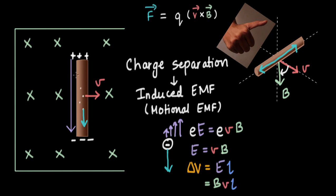Now when we connect the two ends of the rod to a lamp using some wires, the accumulated charges start flowing. All of these electrons start leaving the lower end of the rod, flow through the wire, pass the lamp and deliver some energy to it. Because of that, the lamp starts glowing.